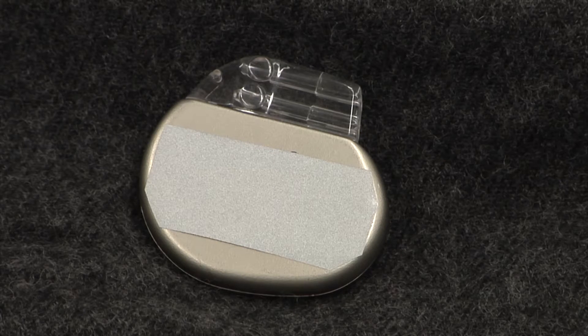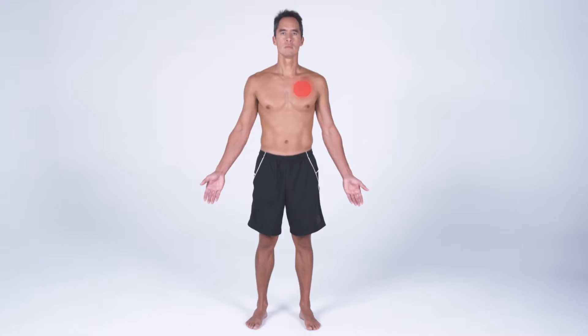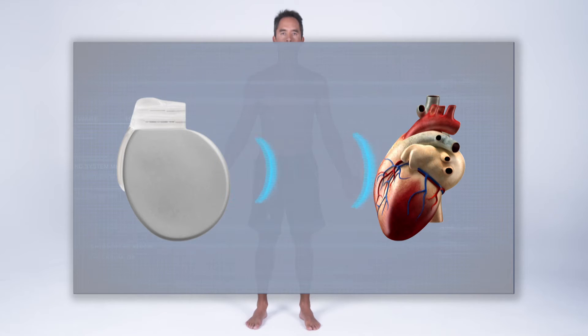To correct this problem, a pacemaker is used. It's a small device implanted in the chest that sends electrical pulses to the heart to help it beat normally. But it's not perfect. Currently, they're powered by lithium-ion batteries, which have to be replaced periodically, usually 7 to 10 years, which requires another surgery.